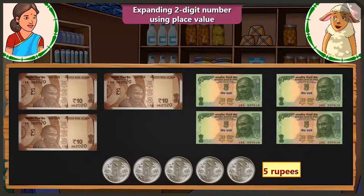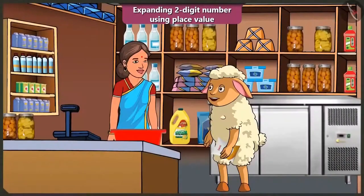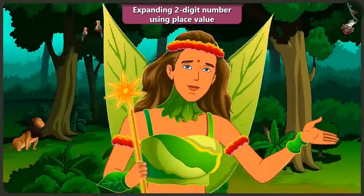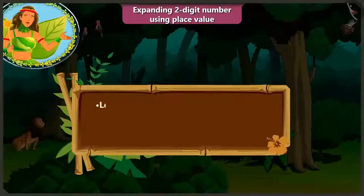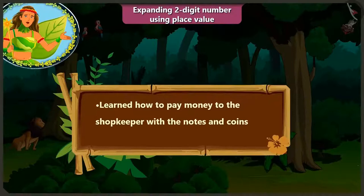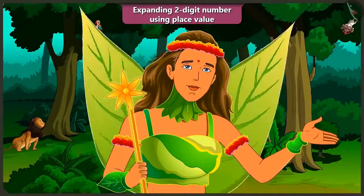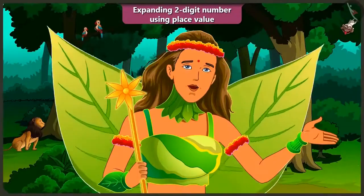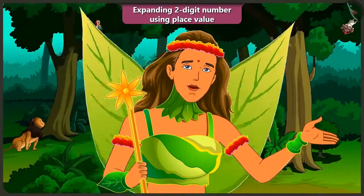Absolutely right, Lily. So, Aunty, take these 5 rupees. Thank you, Lily. Children, today after doing some shopping, we have learned how to make payment to the shopkeeper with the help of notes and coins. In the next video, we will learn to add numbers — a group of two-digit numbers.